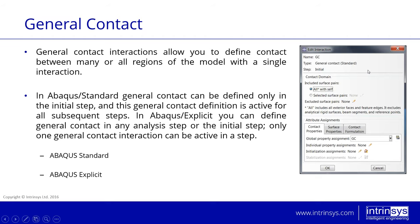With general contact, when running the simulation the software generates interactions automatically between any surfaces that come into contact. For this purpose, you can also exclude some surfaces — you can select which surfaces you want to exclude from the general contact definition. In Abacus Explicit you can define and edit general contact throughout different steps, whereas in Standard you can only generate it in the initial step and it will propagate through subsequent steps.